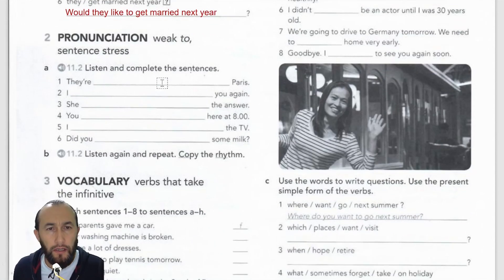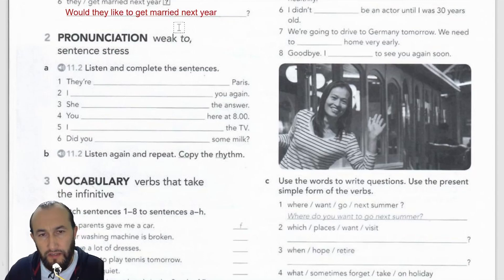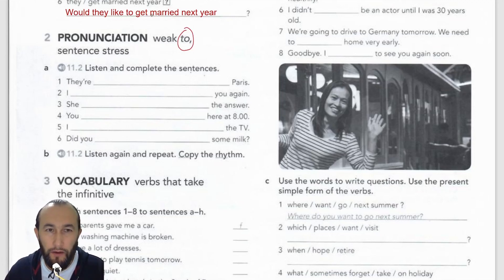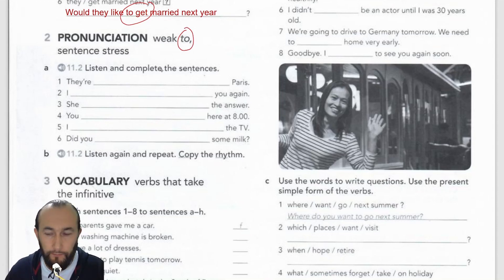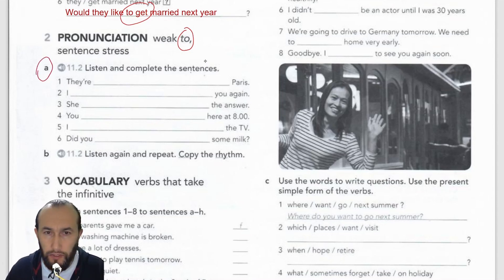Exercise 2 is about pronunciation — specifically the weak form of 'to' before infinitives. In natural fast speech, 'to' is usually pronounced in a weak form. For example, 'Would they like to get married?' — you don't say 'to get married' clearly, it's just 'to get married.' We need to catch that weak form in listening. Exercise A asks us to listen and complete the sentences.